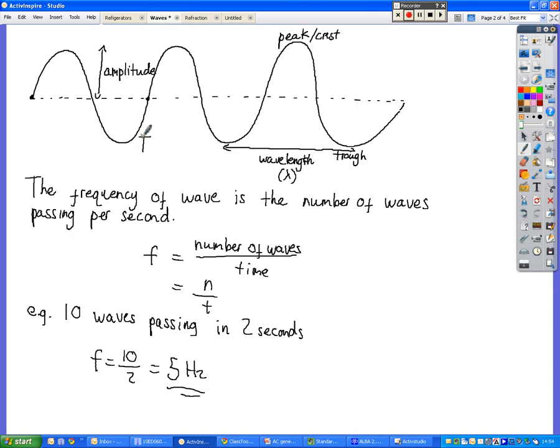We've got peaks and we've got troughs. The peak can also be referred to as a crest. A wavelength is the distance from one wave to the same point on the next wave.